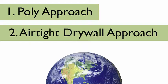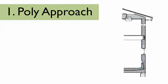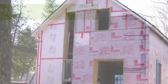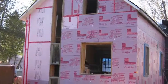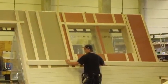The poly approach and where it all started. The first approach for achieving a continuous air barrier is called the polyethylene air vapour barrier, or PAVB. It came to the United States from the Canadian R2000 building program and from similar techniques used in factory-built houses in Sweden.